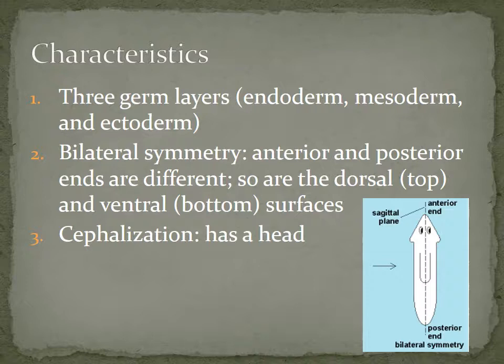There are five characteristics that all flatworms have in common. The first is that they have three germ layers — the endoderm, mesoderm, and ectoderm are all present. They're triploblastic organisms. They all have bilateral symmetry, which is a big step forward from Cnidarians, which had radial symmetry.